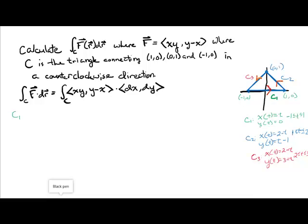On C1, x(t) is t, y(t) is 0. So we're going to plug those in. Our limits on t are -1 to 1. Plugging in t for x and 0 for y: ⟨t·0, 0-t⟩ dotted with the derivatives ⟨x'(t), y'(t)⟩ = ⟨1, 0⟩ dt.